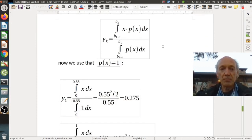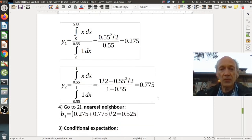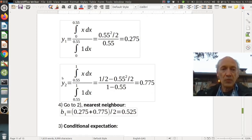We use p(x) equals 1, so then we have from 0 to 0.55, x dx is simply 0.55 squared divided by 2, then the lower integral is 0.55, and then the result is 0.275. For y_2, corresponding formulas, now just for the upper interval, and we get 0.775.